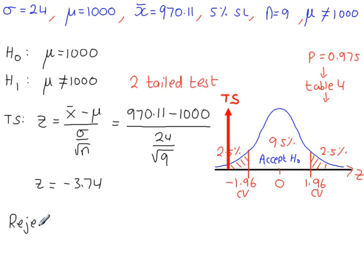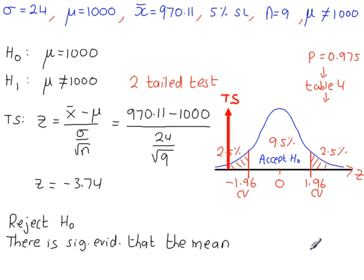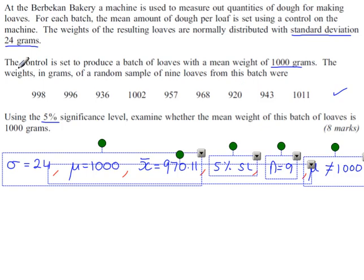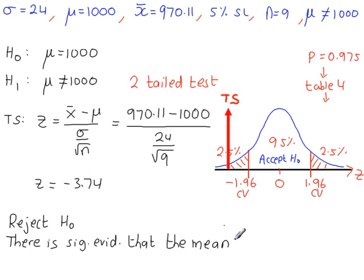So we're going to reject H0. And then we can conclude that there is significant evidence that the mean, and now we need the context of the question here. What are we looking at? The weight of loaves of bread. There is significant evidence that the mean weight of a loaf of bread has changed. H1 says the mean is not equal to 1000. It says that the mean has changed, and we found evidence for H1.